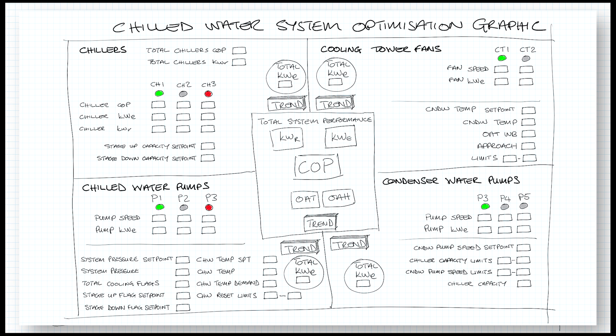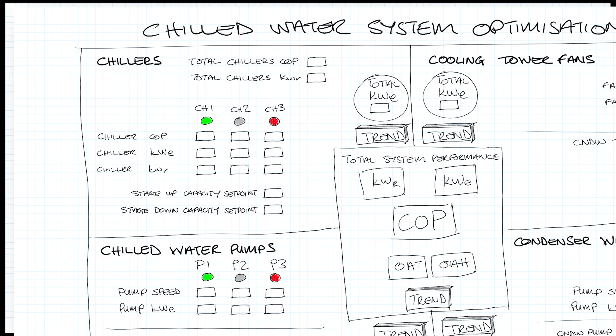If you're doing chilled water optimization on site, you have to have a page like this - if you don't, I'd propose you're not doing optimization properly. On the top left I have 'Chillers' with all the points associated with chiller staging: staging on capacity, and for each of the three individual chillers I have the COP, the electrical power consumption in kilowatts, and the kilowatts of cooling. A green dot means the chiller is running, gray means it's not running, red means it's in fault. I've also totalized the total chilled water COP for all three chillers and the total kilowatts of cooling.